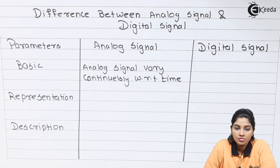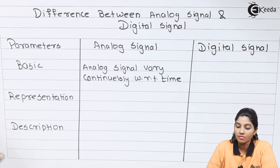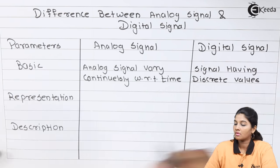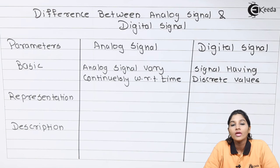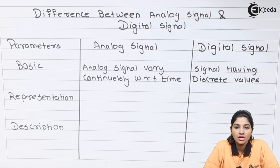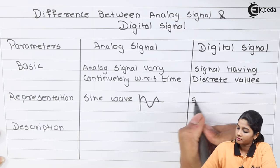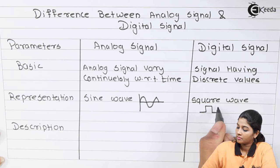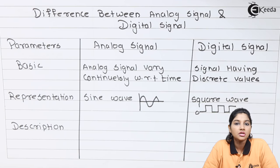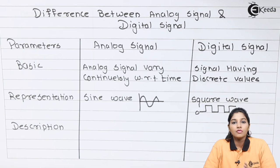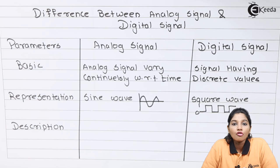Analog signals vary continuously with respect to time whereas digital signals have discrete values. For representation, analog signals are usually represented in the form of a sine wave whereas digital signals are represented in binary form, that is in the form of a square wave. For description, analog signals describe information in terms of amplitude, frequency, and phase distortion, whereas digital signals are described in terms of bit rate and bit interval.